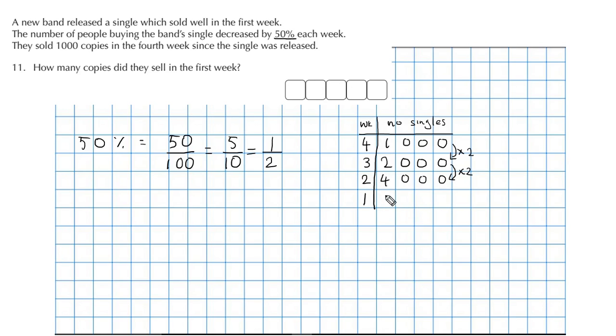Okay, and same process again. This amount, 4000, we know was half of what they sold in week 1. So again we're going to multiply by 2, because that means what they sold in week 1 was twice as much as what they sold in week 2, and that gives us 8000 singles.